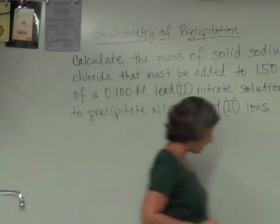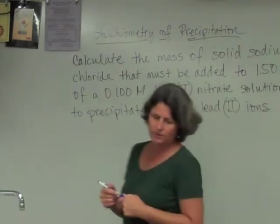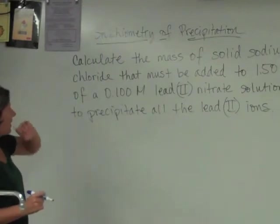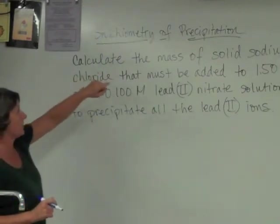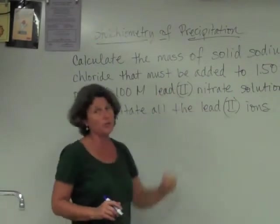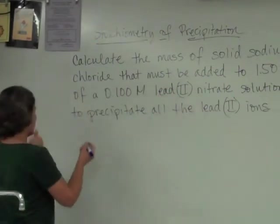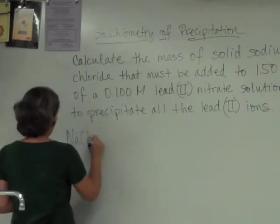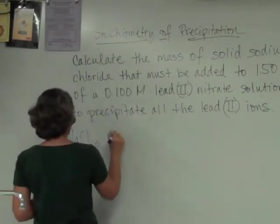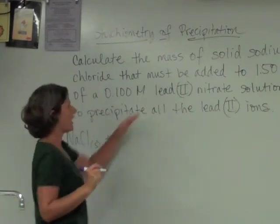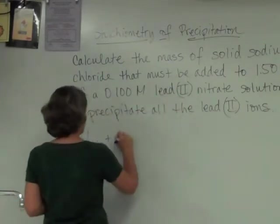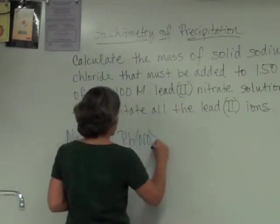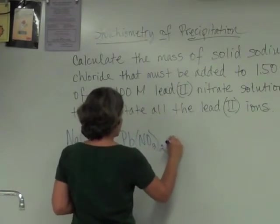Just like any other stoichiometry problem, we need to start with a balanced equation. So we have got, we are going to have a reaction between sodium chloride and lead(II) nitrate. So we have NaCl. And in this case, it's going to be a solid. And it's going to react with lead(II) nitrate. Pb(NO3)2. And that's an aqueous solution.